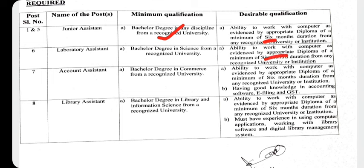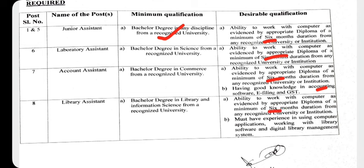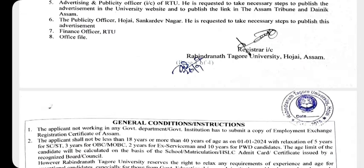Next post was account assistant — bachelor degree in commerce is required. Also, a six-month computer diploma, along with knowledge of accounting software, e-filing, and GST is required. Next was library assistant — bachelor degree in library and information science is required. Also, a six-month computer diploma along with library software and digital library management system knowledge is required.